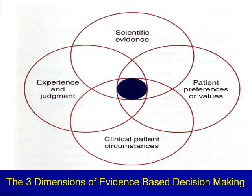There are three dimensions of evidence-based decision making: scientific evidence, experience and judgment, clinical patient circumstances, and patient preference or values. The patient should not be omitted. If you want to introduce a treatment to a patient, we have to take into account the patient's preferences and values.